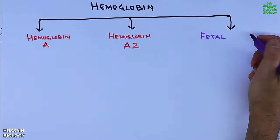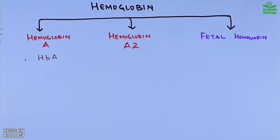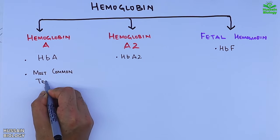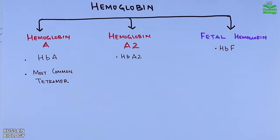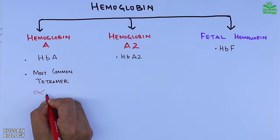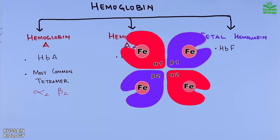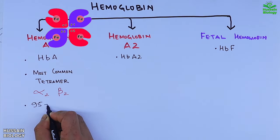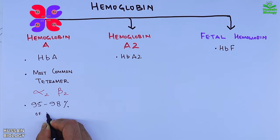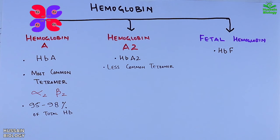Moving further to hemoglobin types, there are three major types: hemoglobin A, hemoglobin A2, and fetal hemoglobin. Hemoglobin A is the most common and abundant type in humans. It has two alpha polypeptide chains and two beta chains, as shown in the diagram, and comprises 95 to 98% of total hemoglobin in the blood. Hemoglobin A2 is the least common tetramer, with two alpha chains and two delta chains — the two beta chains are replaced by delta chains.